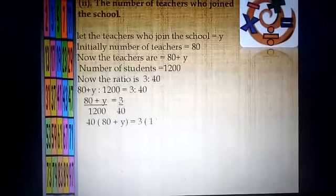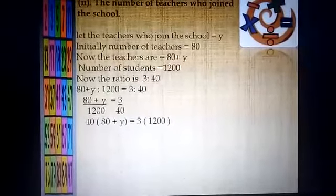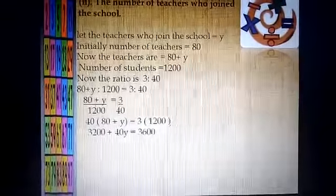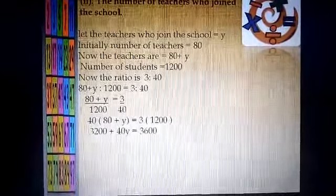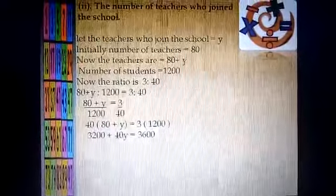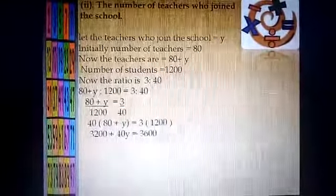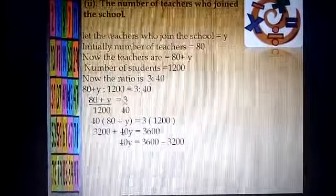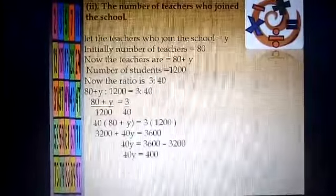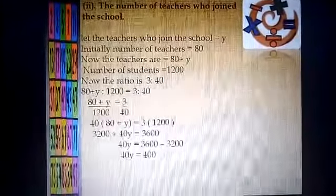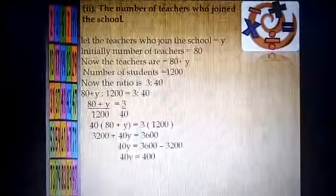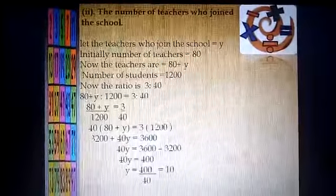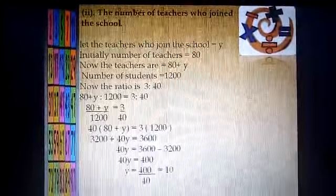Now, by cross multiplication: 40 multiplied by (80 plus y) equals 3 multiplied by 1200. So 3200 plus 40y is equal to 3600. To find y, we move 3200 to the other side: 40y is equal to 3600 minus 3200, which is 400. Moving 40 to the other side, y is equal to 400 divided by 40, which equals 10.